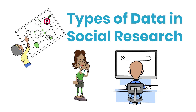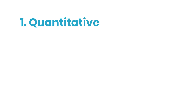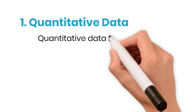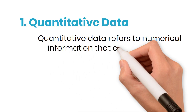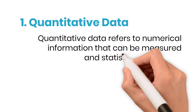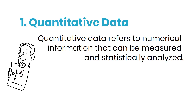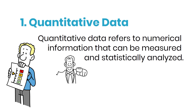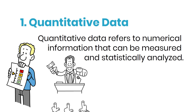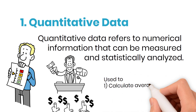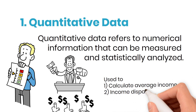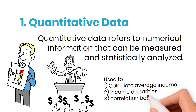Number one: quantitative data. It refers to numerical information that can be measured and statistically analyzed. It's often used to identify patterns, test hypotheses, and draw generalizable conclusions. For example, a researcher studying income inequality might collect data on household incomes, education levels, and employment rates across different demographic groups. This numerical data can be used to calculate average incomes, income disparities, and correlations between education and earnings.